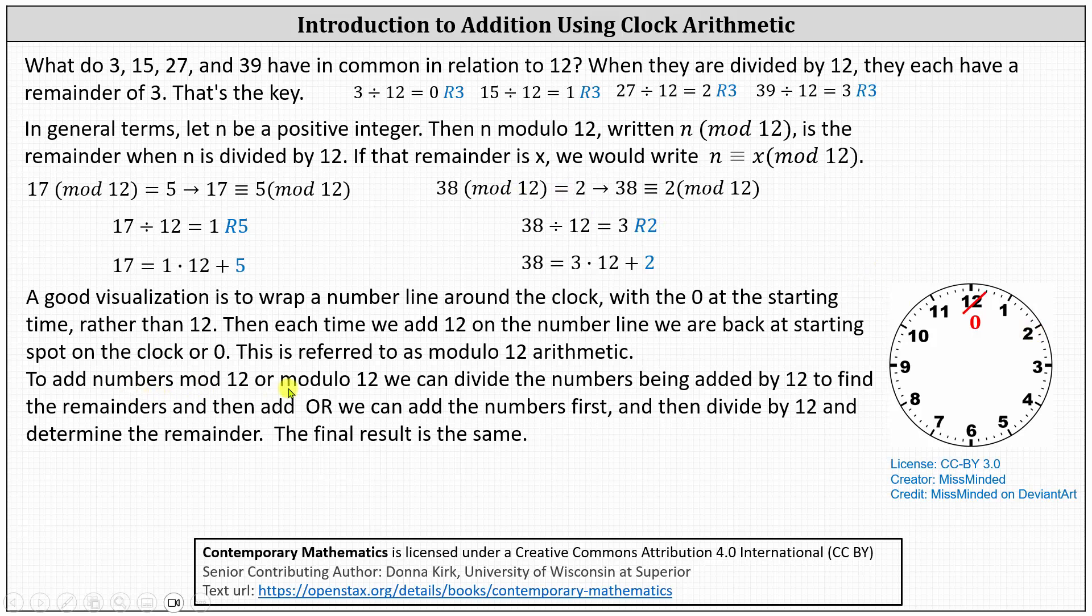To add numbers modulo 12, there are two methods. For the first method, we can divide the numbers by 12 to find the remainders and then add, or we can add the numbers first, then divide by 12 and determine the remainder. Either way, the result is the same.